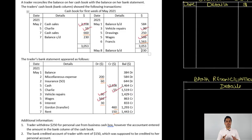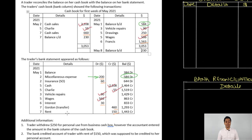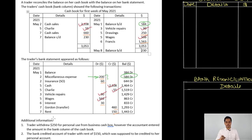Let us prepare our updated cash book first. We need to look for amounts that are present in the bank statement but not in the cash book. The opening balance of the cash book was $584 whereas the opening balance of the bank statement was $384. After a miscellaneous expense of $200 was debited in the bank statement, the bank balance became $584. This $200 was a reason for difference in the previous period — the bank has now debited that amount and the balance is reconciled. So this $200 will not be considered for reconciliation in the current period.